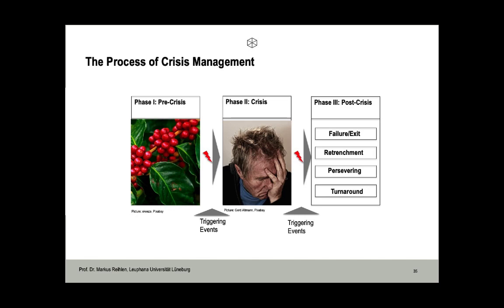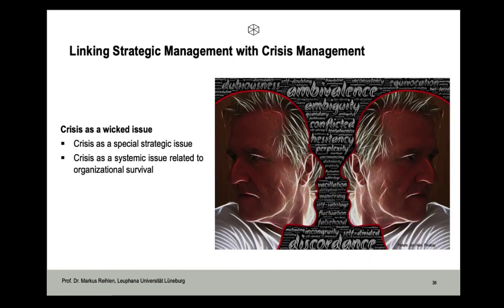Let's link strategic management with crisis management. Traditional strategic planning literature has dealt with strategic issues in a way that does not really help organizations cope with big problems — treating them as well-structured and clear-cut. The mode of strategizing was gathering data, breaking down the problem into smaller problems, and using many planning techniques. This approach does not help to understand crisis or develop a suitable response strategy, because it does not allow generating fresh ideas for implementing the necessary solutions.